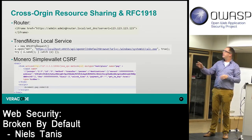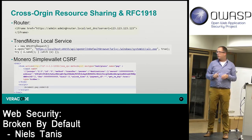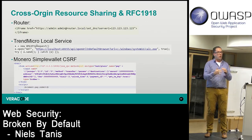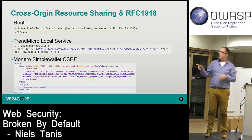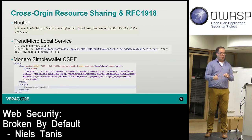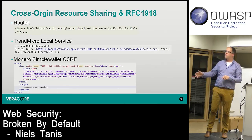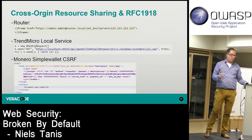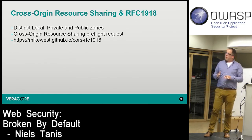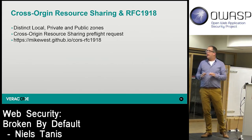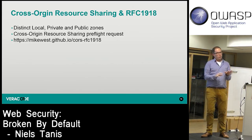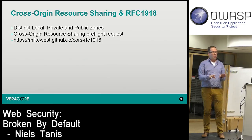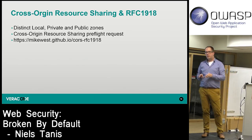The third example, seen about a month ago, involves Monero cryptocurrency. There's a wallet with a local API service running, and with the right CSRF request embedded in someone's page, if they have that service running locally, it will transfer their money to the attacker's account. These three examples all show different types of request forgeries targeting local services.